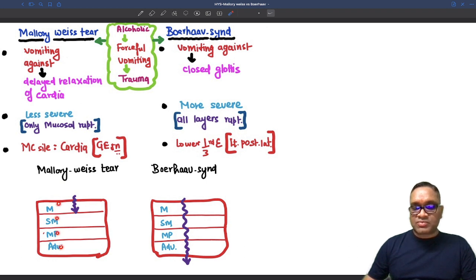So you can see mucosa, submucosa, muscularis propria, adventitia. Only mucosa has been damaged here, so only mucosal tear will be seen.